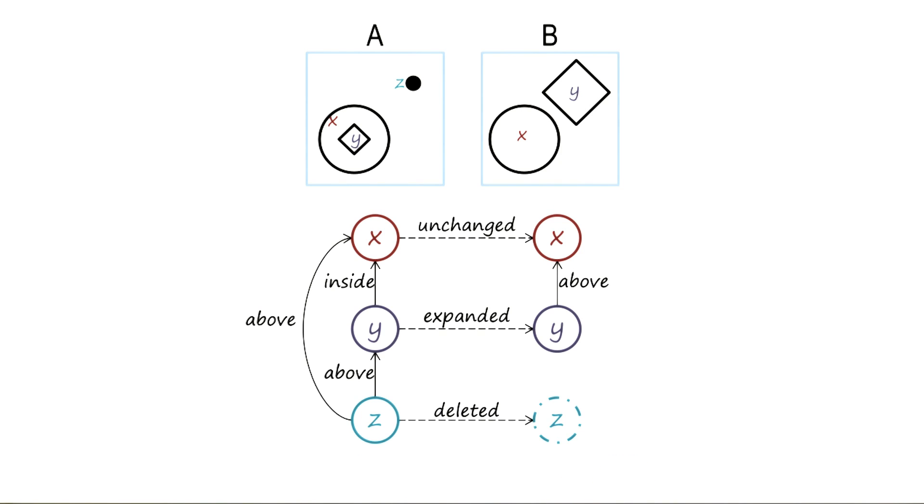I hope you can see from this example how we constructed a semantic network for the relationship between the images A and B. There were three parts to it. The first part dealt with the objects in A and the objects in B. The second part dealt with the relationships between the objects in A and the relationship between the objects in B. The third part dealt with the relationship between the objects in A and the relationships between the objects in B.